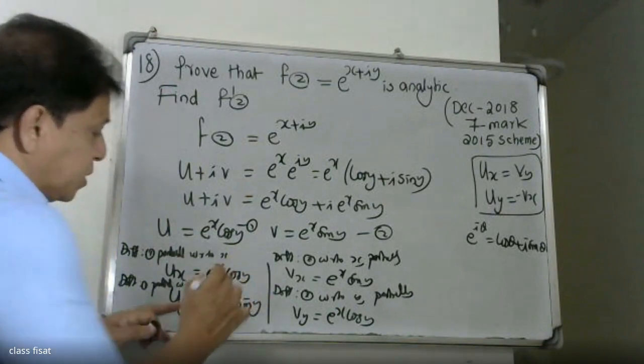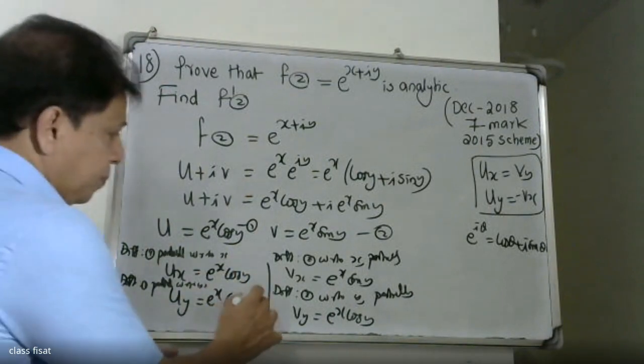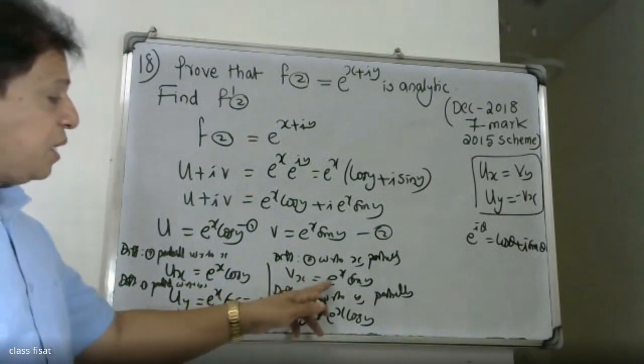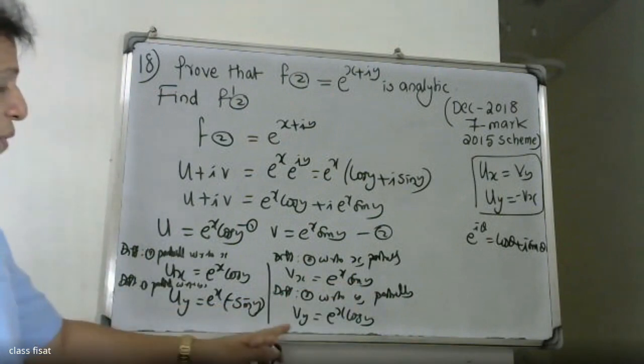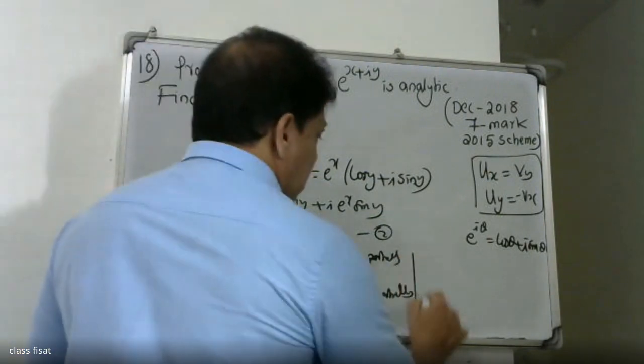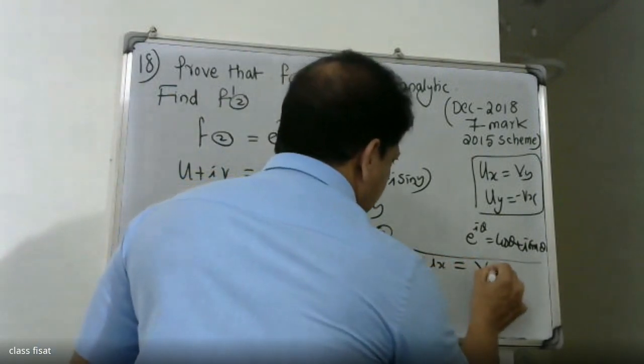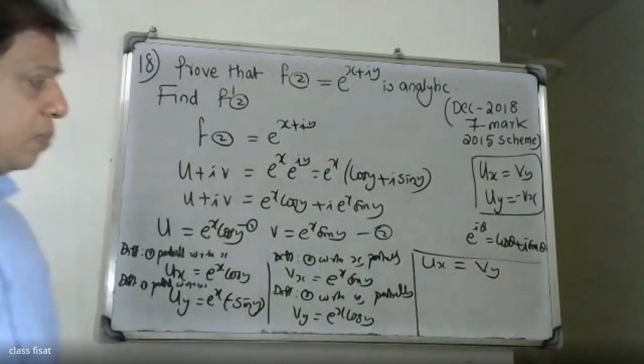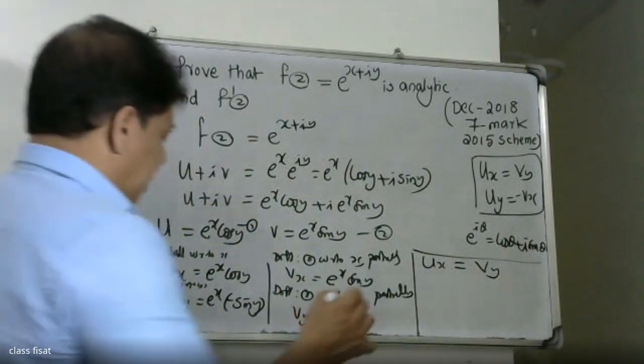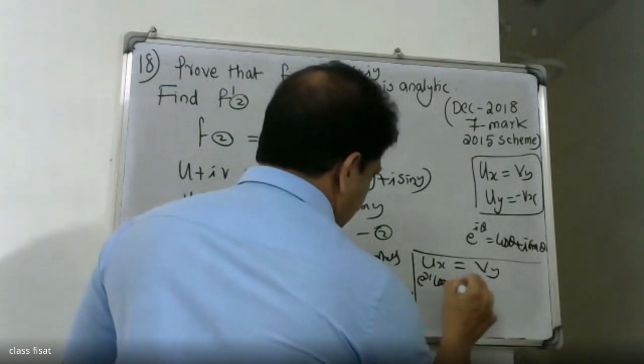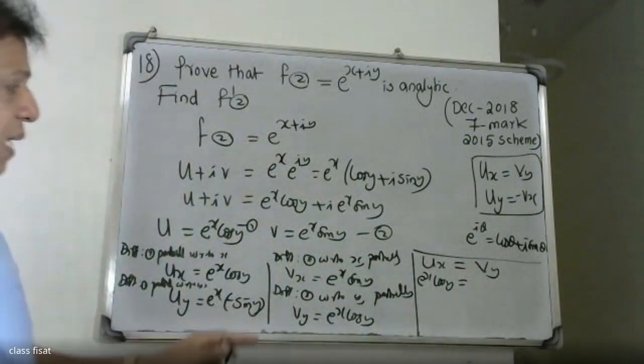So we have: ∂U/∂x = e^x·cos(y), ∂U/∂y = -e^x·sin(y), ∂V/∂x = e^x·sin(y), and ∂V/∂y = e^x·cos(y). These are the values of all four partial derivatives.